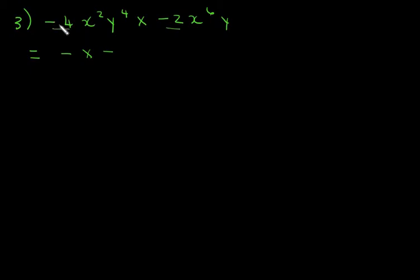So negative 4 times negative 2 will give you positive 8. And then x squared times x to the power 6, we say 2 plus 6, that will give me x to the power 8. And we add the exponents of the y's together. That's y to the power 4. But what is this? This is an invisible 1. And 4 plus 1 is 5.